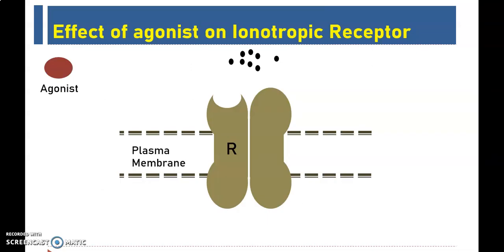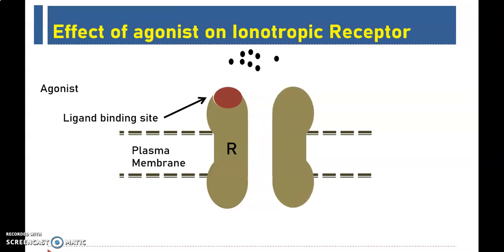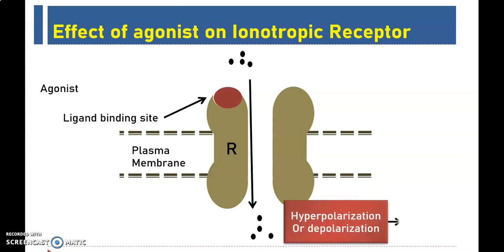Here the picturization is given: this one is the receptor, and this one is the agonist. These are the ions present at the extracellular site. As I click, it shows the ligand binding site. The agonist will come and bind at the ligand binding site. The conformational change happens inside the receptor that opens the gate. More ions move from extracellular to intracellularly. This movement of ions inside the cell causes hyperpolarization or depolarization of the cell, and this results in cellular effects.